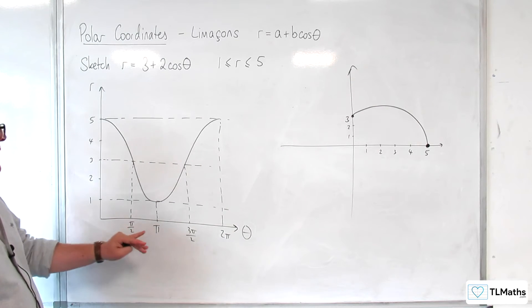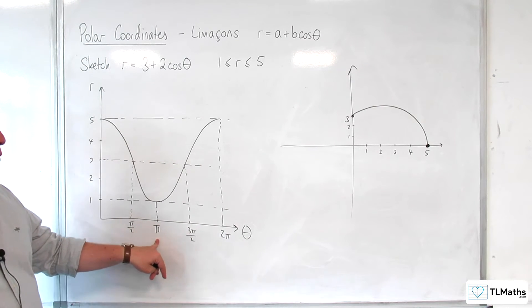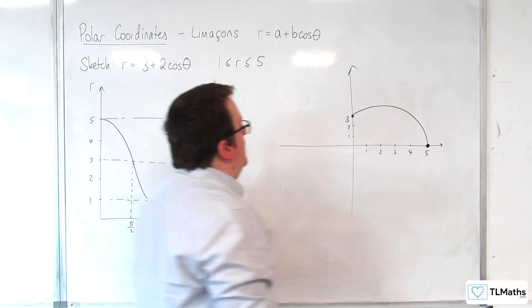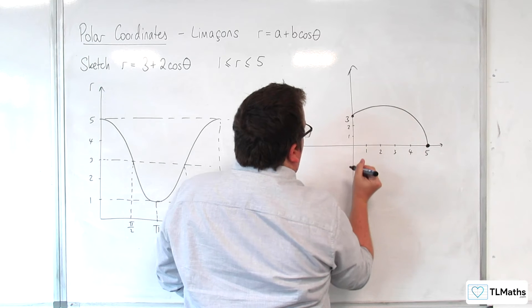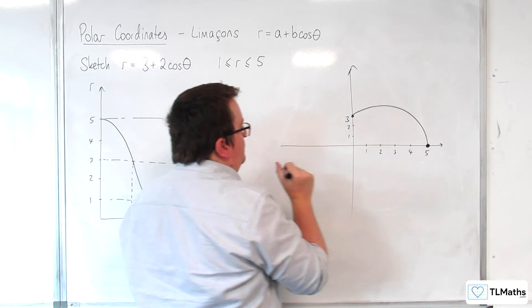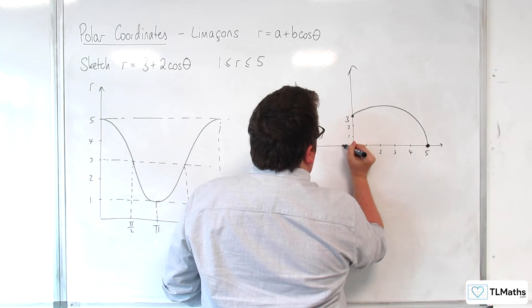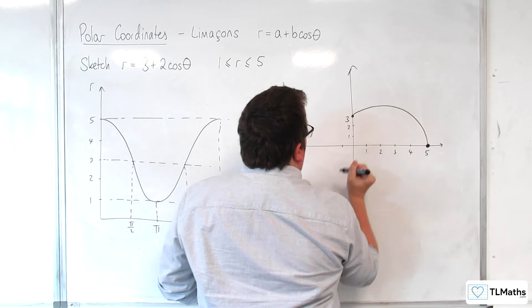So then when we get to theta is pi, we're going to be at r is 1. So when we're at theta is pi, and r is 1, we're going to be here.